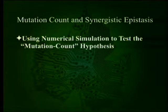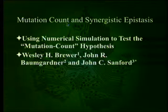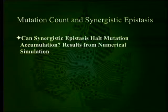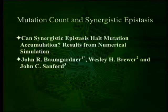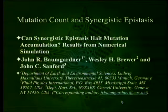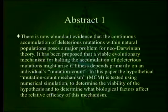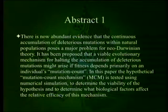We're looking at two papers. The first one is 'Using Numerical Simulation to Test the Mutation Count Hypothesis,' by Wesley Brewer, John Baumgardner, and John Sanford. The second one is 'Can Synergistic Epistasis Halt Mutation Accumulation? Results from Numerical Simulation,' also by Brewer, Baumgardner, and Sanford — the same three people. I'm going to go through the abstracts and then explain the point of the two papers, which are related to each other.